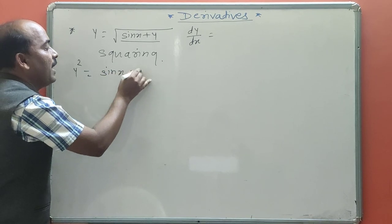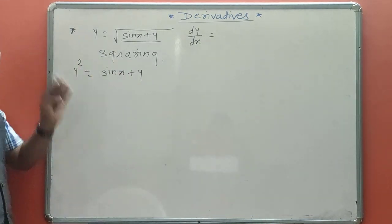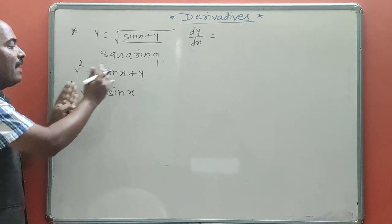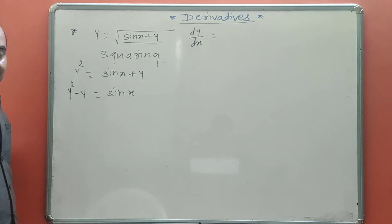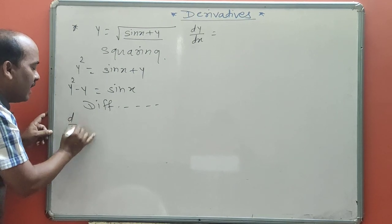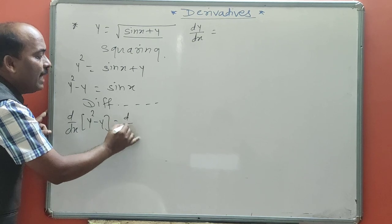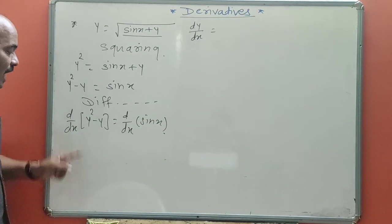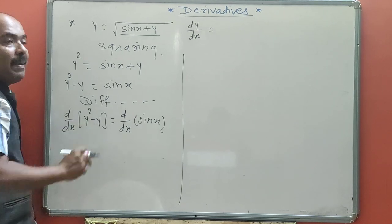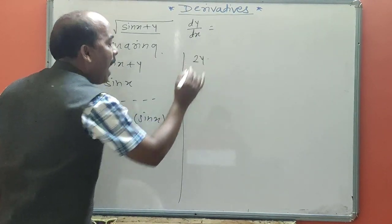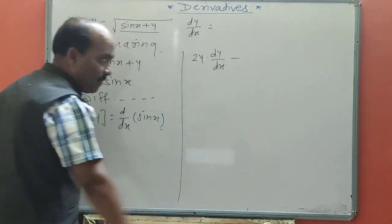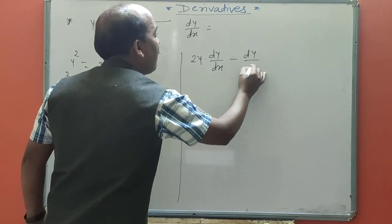Remaining: y² = sin x + y. To find dy/dx, separate the y variable terms: y² minus y = sin x. This is the simplified statement. Now differentiate with respect to x. Derivative of y² is 2y times dy/dx, and derivative of y is dy/dx. So: 2y·(dy/dx) minus dy/dx equals derivative of sin x.